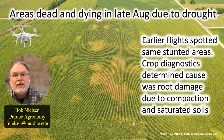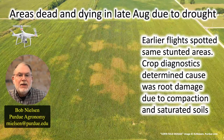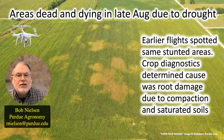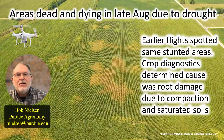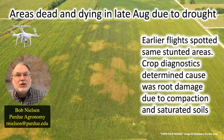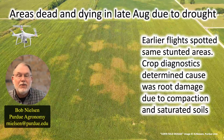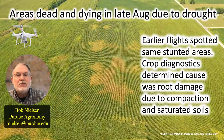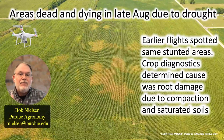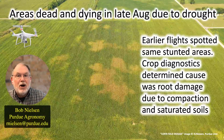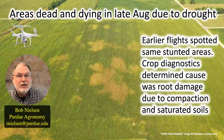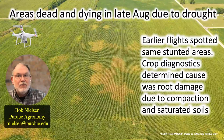Here's an example from one of our fields this past summer. This is an image flown in late August, and there are clearly areas in this field that are dead and dying. It's not clear from the image that they're dying because of drought, but boots on the ground confirm — along with the weather records — that these were areas of the field dying prematurely because of very severe drought stress. We can make that determination in August that the cause at that point in time was due to drought. But I had also done earlier flights on this field and spotted the same stunted areas beginning in mid-June.